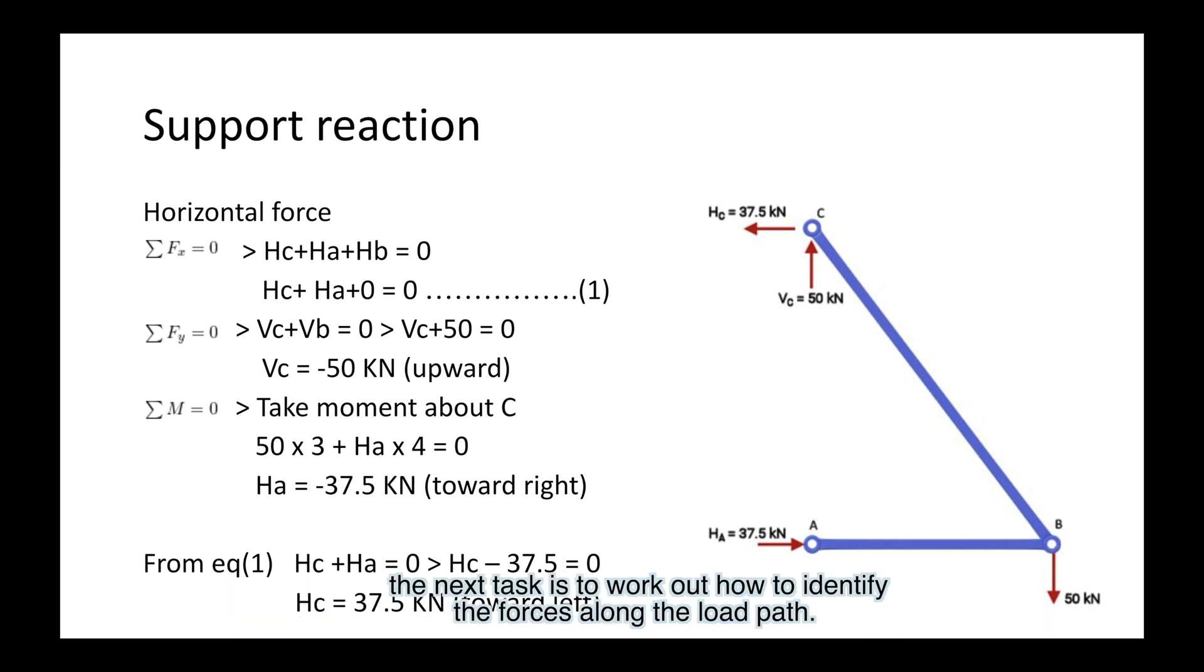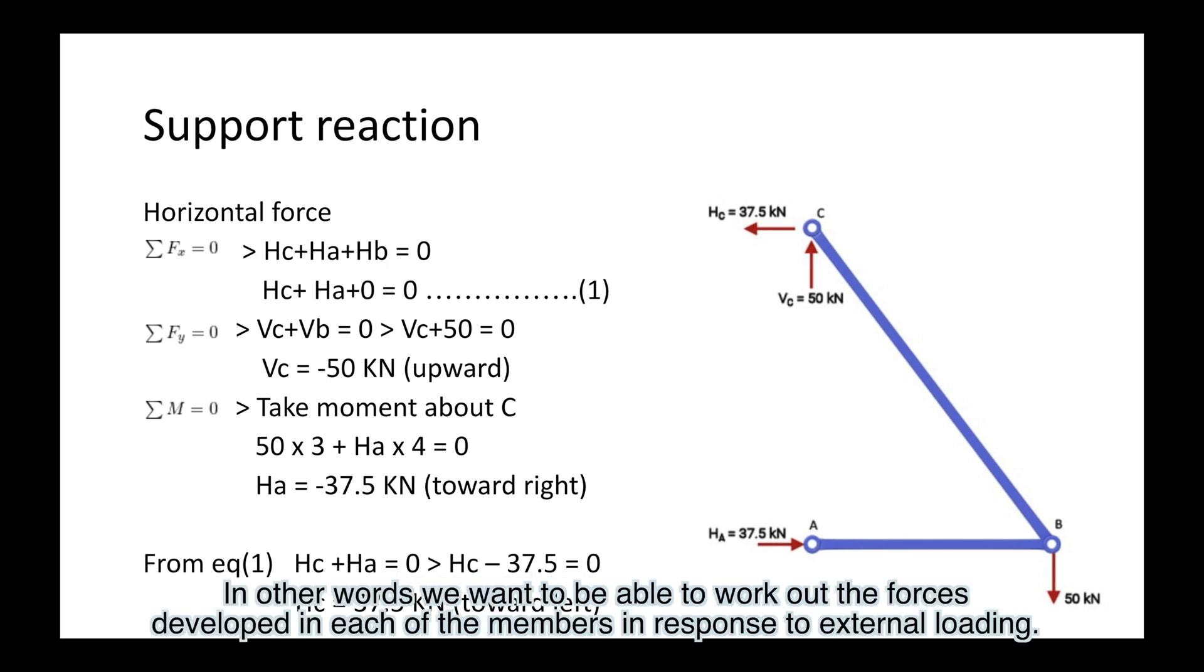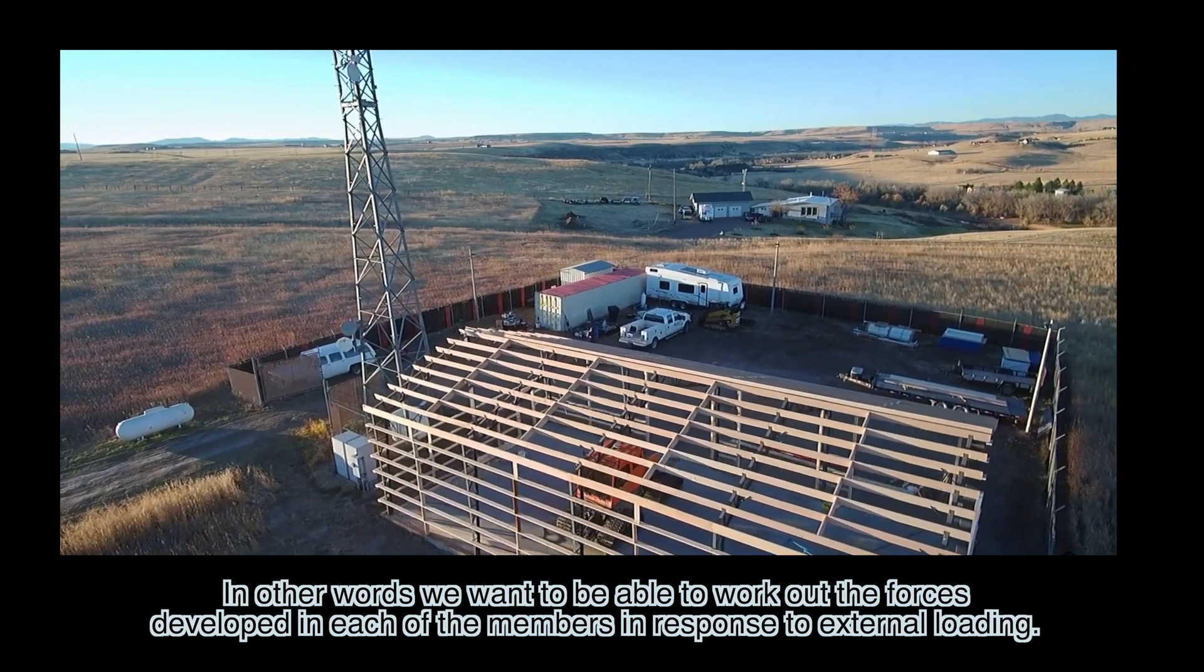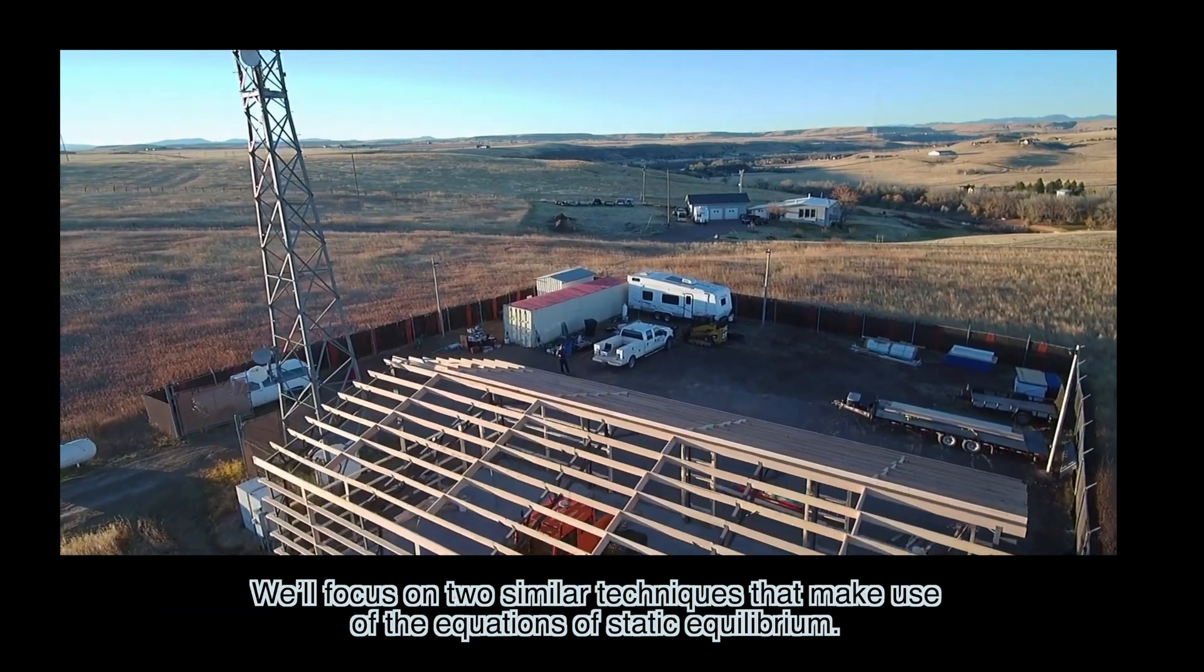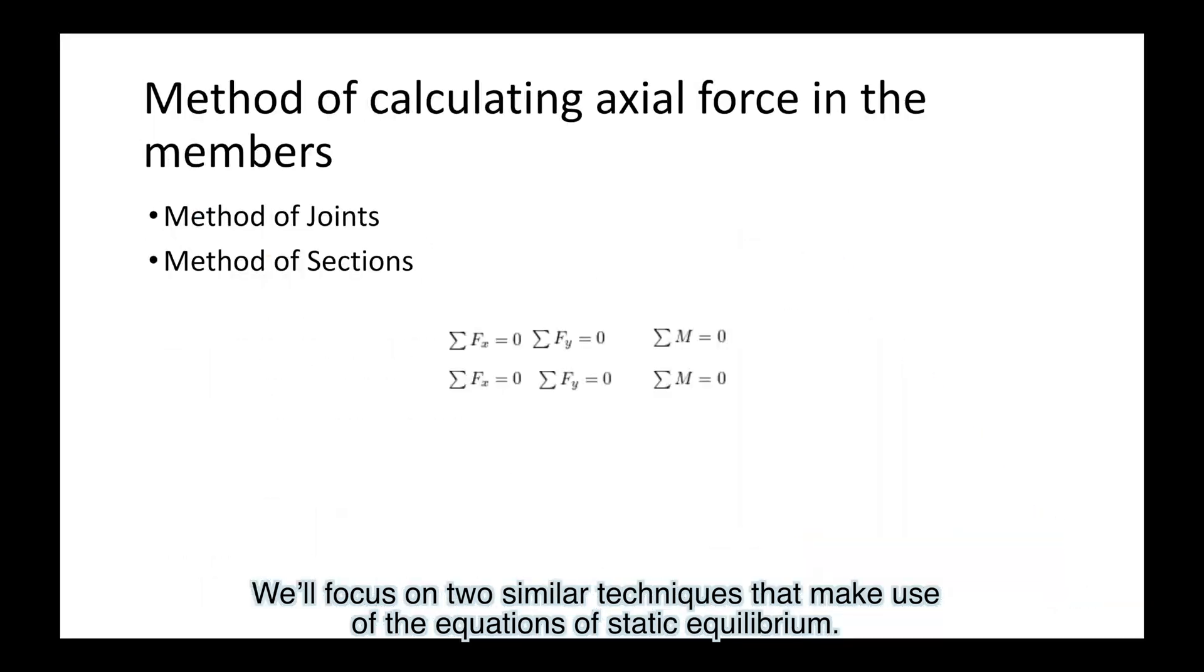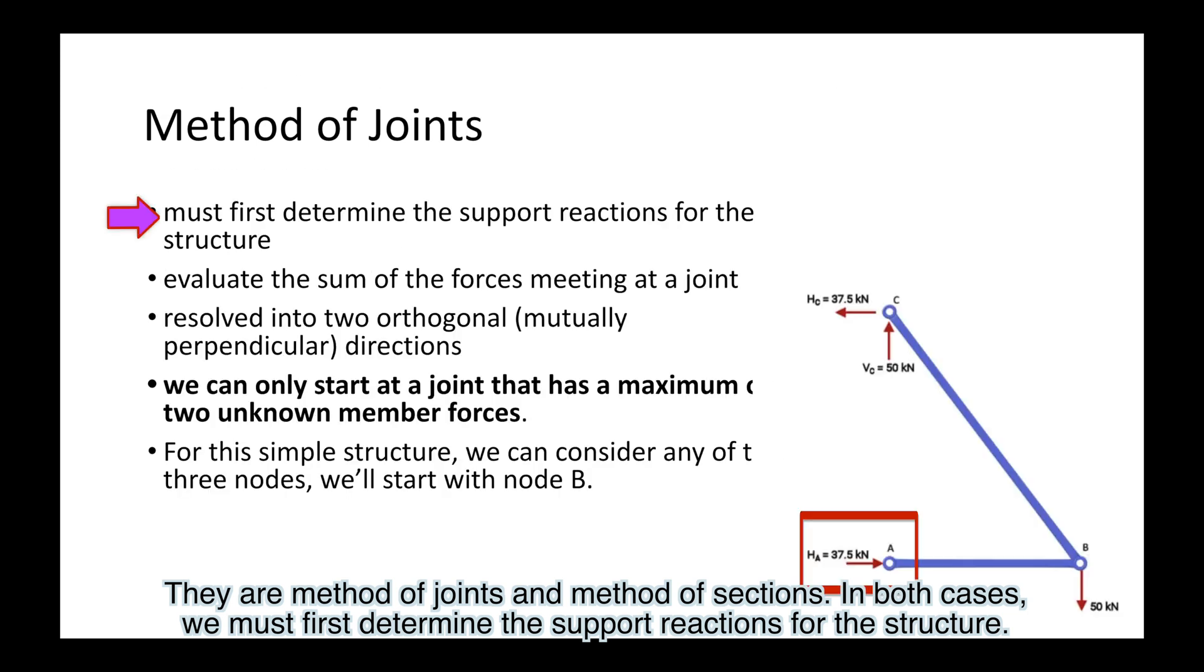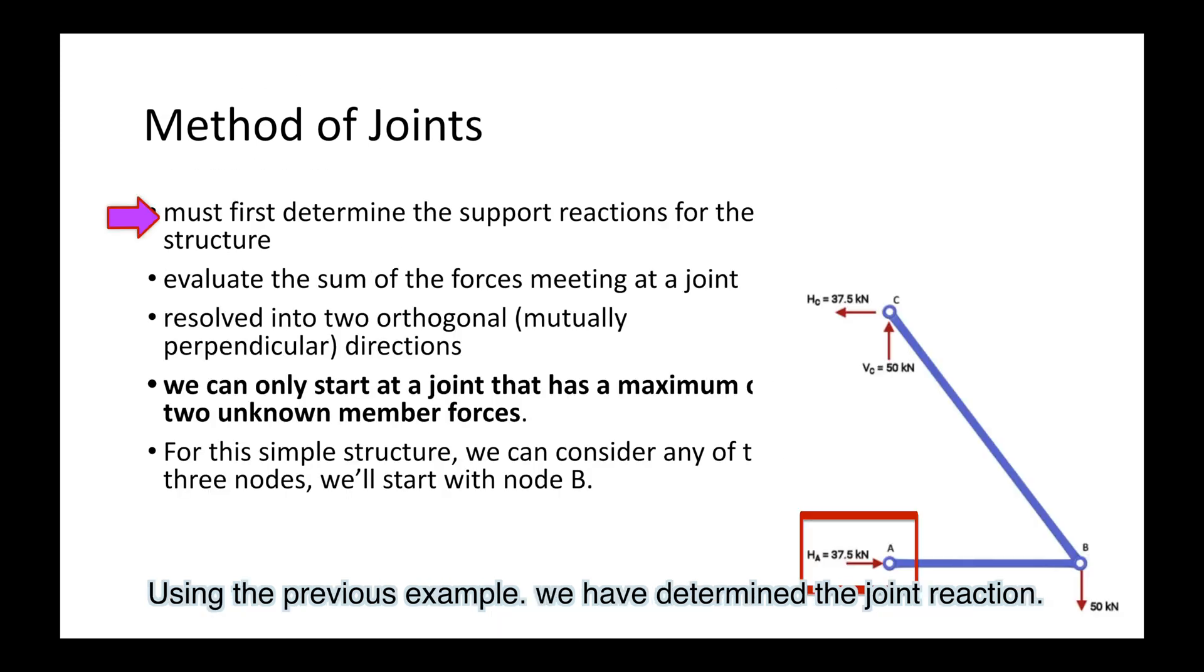Now that we've clarified what a truss is and the concept of a load path describing the transmission of forces through the structure, the next task is to work out how to identify the forces along the load path. In other words, we want to be able to work out the forces developed in each of the members in response to external loading. We'll focus on two similar techniques that make use of the equations of static equilibrium: method of joints and method of sections. In both cases, we must first determine the support reactions for the structure.